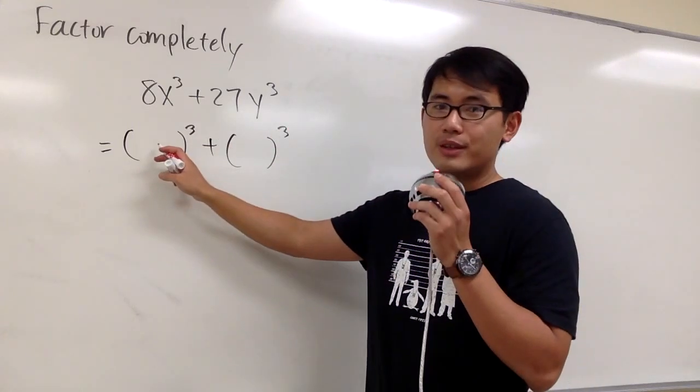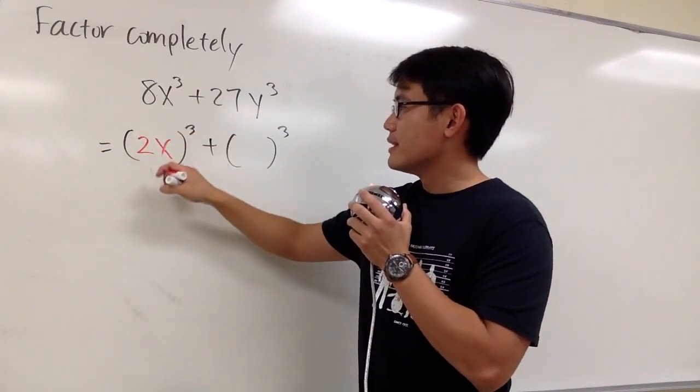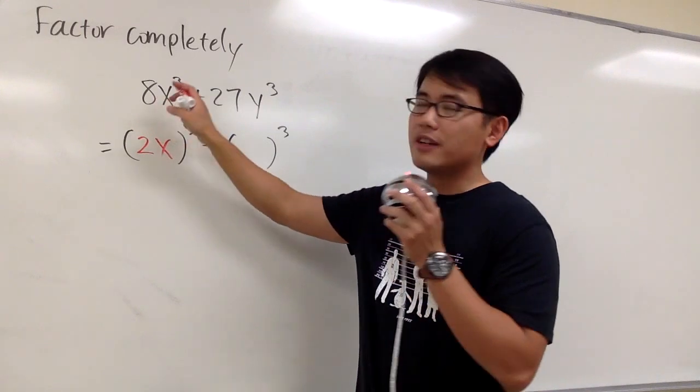What's in the first parentheses? Well, what times what times what will be 8? That's 2, right? And then we also have the x. 2x to the third power will give us 8x³.